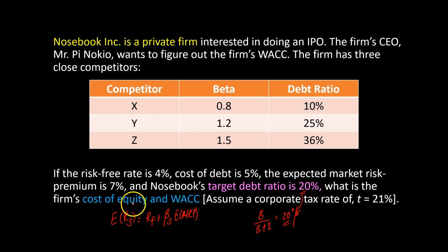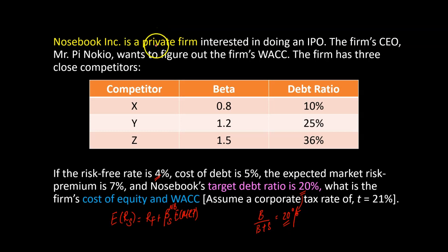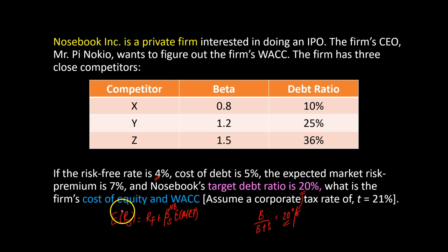For the cost of equity calculation, we need three things: the risk-free rate, the equity beta, and the expected market risk premium. The risk-free rate is given at 4% and the expected market risk premium is given at 7%. However, we don't have Nosebook's equity beta because Nosebook is a private firm — its stock does not trade, so there are no stock returns to measure sensitivity against market-wide movements.